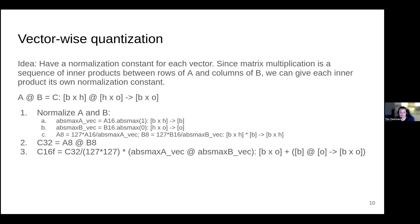The main idea of vector-wise quantization is that instead of having a single normalization constant for each tensor, we can have a normalization constant for each row of matrix A and each column of matrix B. With that, each inner product in the matrix multiplication has its own normalization constant. So if an outlier is contained in a row, the next row is not affected by that outlier, which increases overall precision and gives a lower error in the matrix multiplication output. To undo the operation, we perform denormalization through the outer product of these two vectors.